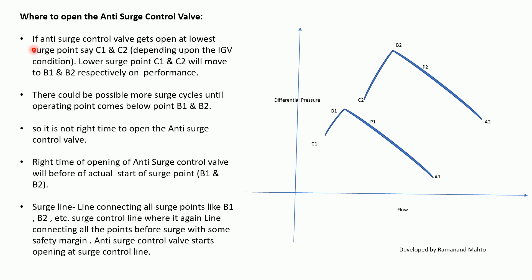Where should the anti-surge control valve open? If it opens at the lowest surge point — say C1 and C2 depending on IGV condition — those points will move to B1 and B2 respectively on the performance curve. By opening the anti-surge valve, the operating point tries to move from C1 to B1. However, there could be multiple surge cycles before the operating point comes below B1 and B2, since the area between C1/C2 and B1/B2 is still within the surge zone.